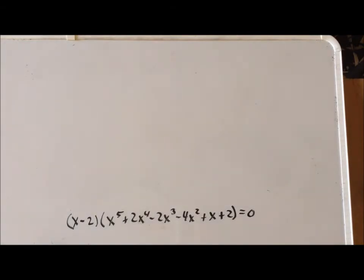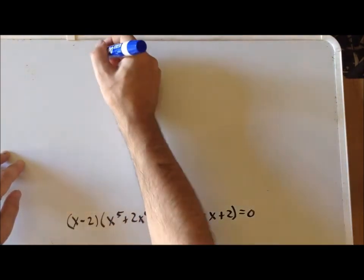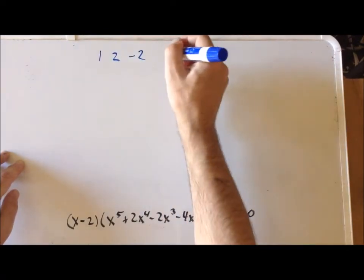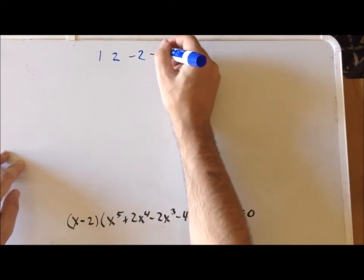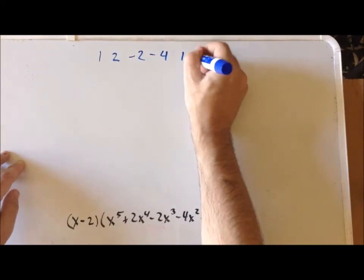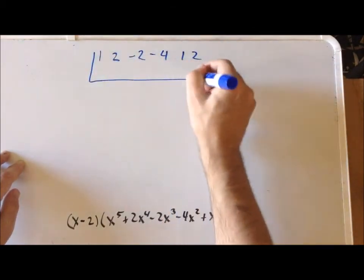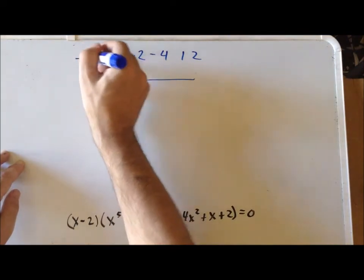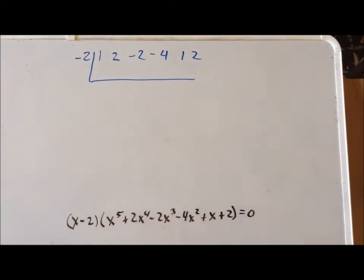We can apply the technique of synthetic division yet again. Using the coefficients of this polynomial, which are 1, 2, minus 2, minus 4, 1, and 2. And now let's try the possible root minus 2. We can guess at possible roots of our polynomial using the rational roots theorem, for example.